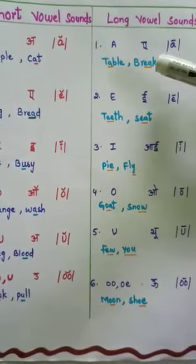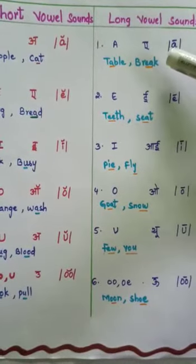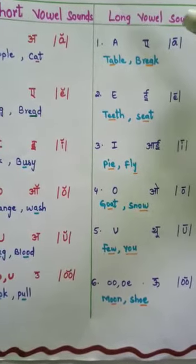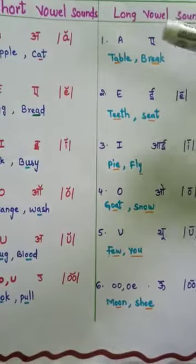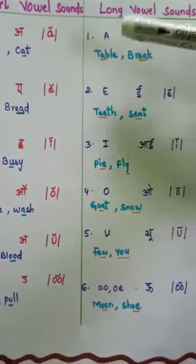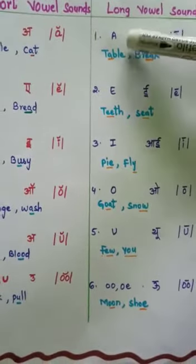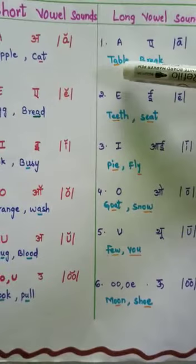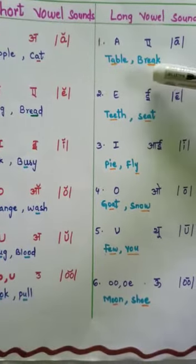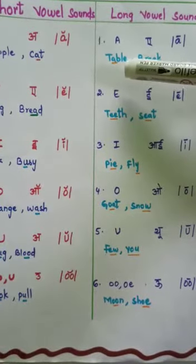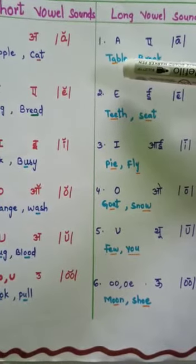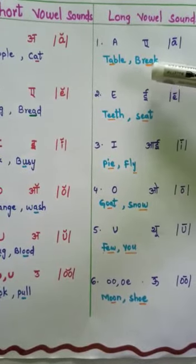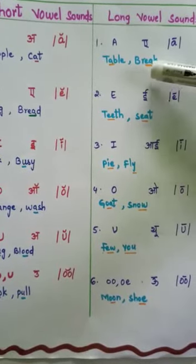Now let us see each letter. A makes the sound /eɪ/. Examples: table and break. Table makes the /eɪ/ sound — table. Break also has the /eɪ/ sound — break.